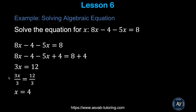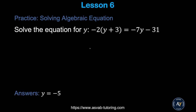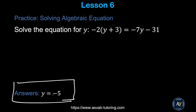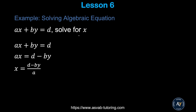Here is another type of algebraic equation: −2(y + 3) = −7y − 31. Use what you've learned from the previous examples and try to solve it yourself. Make sure you get the correct answer.